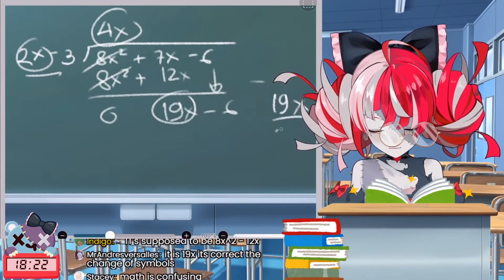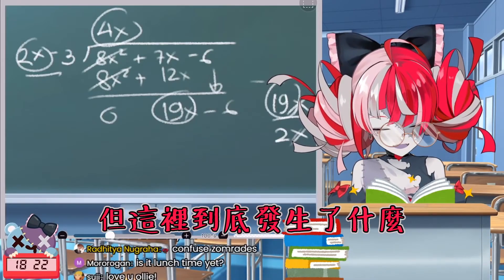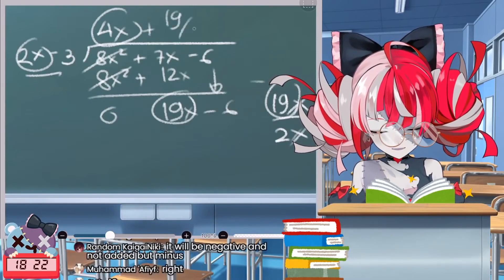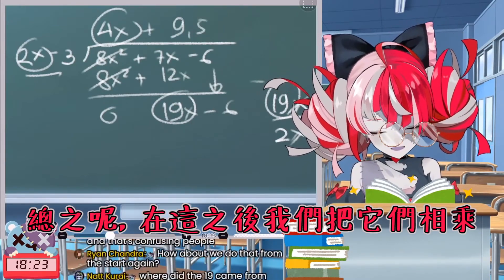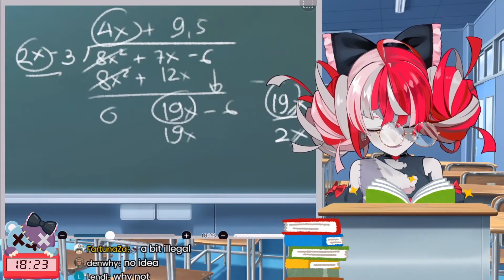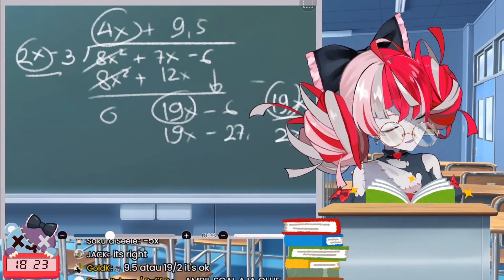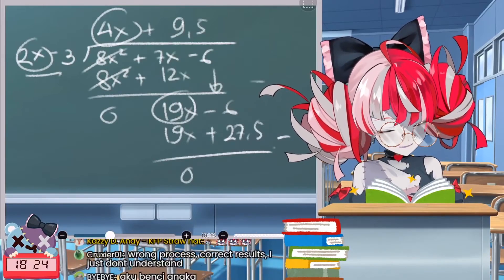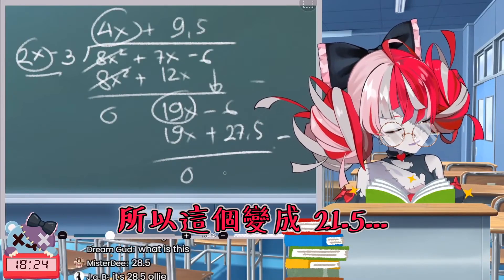Next, 19x gets divided by 2x — we get rid of the x. I'm not entirely sure... it becomes something like plus or minus. Then we multiply that result by two x minus three. This is how you do it — this becomes zero and we end up with something like 21.5. Am I doing this right?